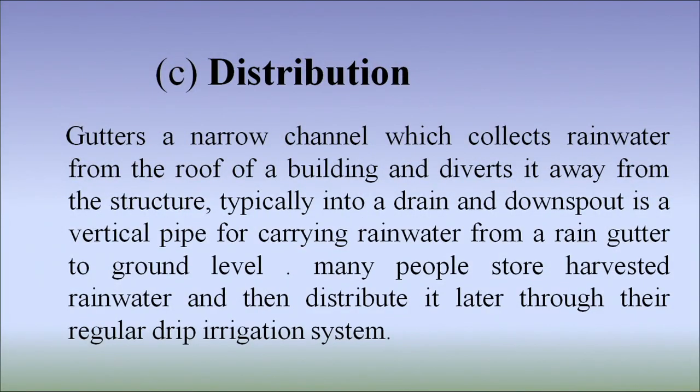Next is distribution. Gutters or narrow channels collect rainwater from the roof of a building and divert it away from the structure, typically into a drain. A downspout is a vertical pipe for carrying rainwater from rain gutter to ground level. Many people store harvested rainwater and then distribute it later through their regular drip irrigation system.